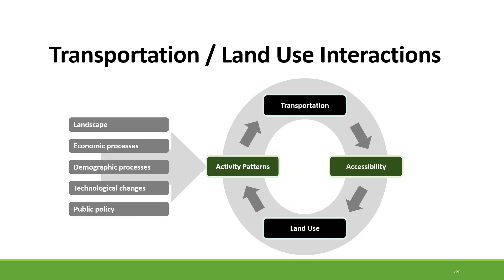This graph shows how transportation and land use interact with each other. Transportation provides accessibility, and that accessibility will incentivize people to settle down and start businesses, set up industries, or establish residential areas. That will ultimately develop activity patterns, which are influenced by different processes that will then extend, improve, or even revolutionize the transportation system through new technology.